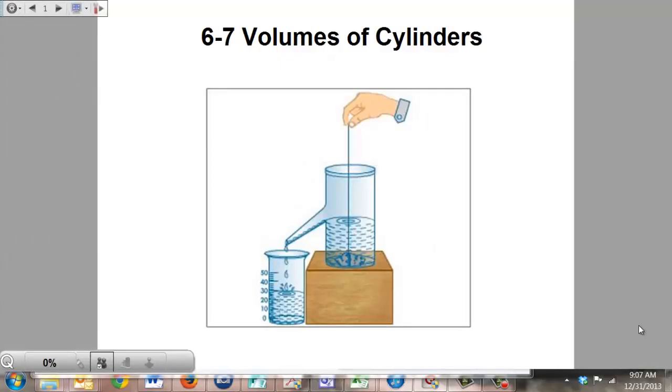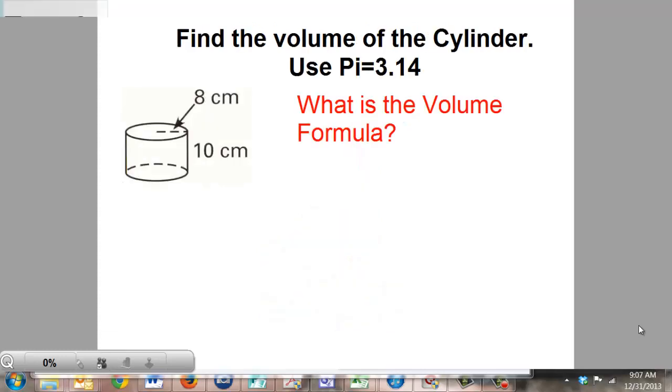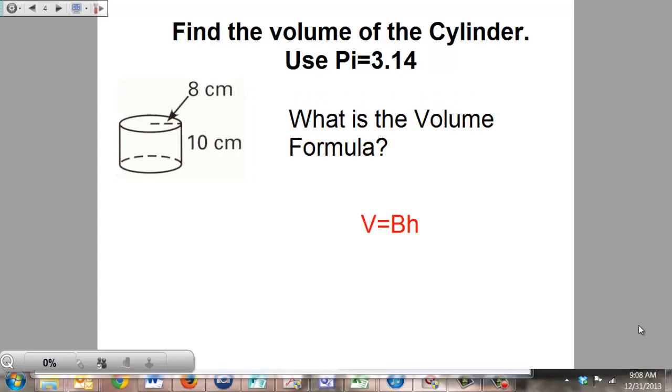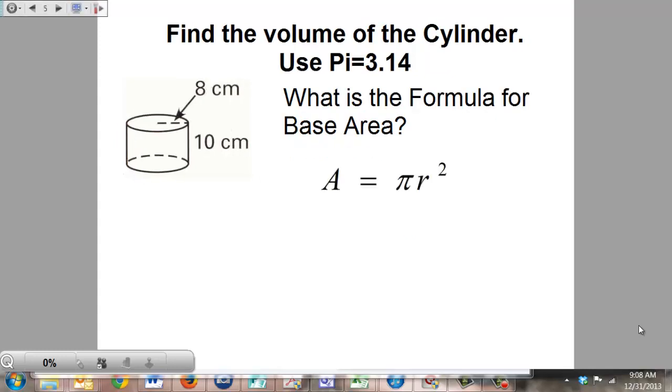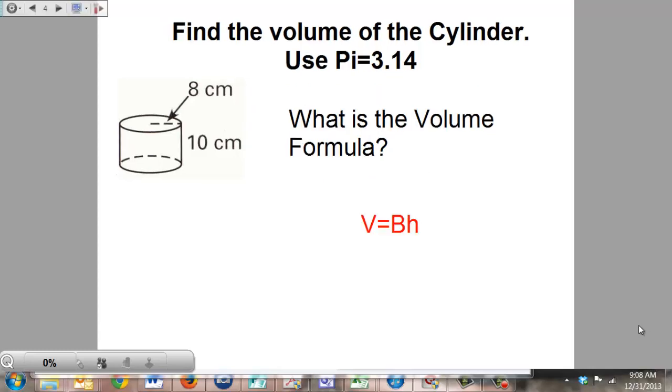6-7 volumes of cylinders. We're going to start off with this cylinder here. You can see it has a radius of 8 centimeters and a height of 10 centimeters. We've worked with volume before, only in the past we did prisms. What was the formula that we used to find the volume of a prism? It was volume equals base area times height. That is the same formula we're going to use today in finding the volume of a cylinder.